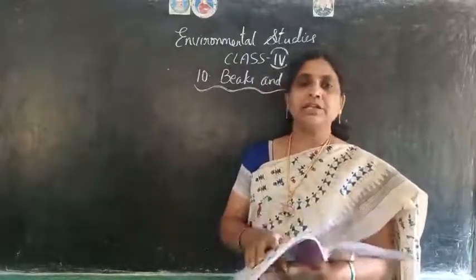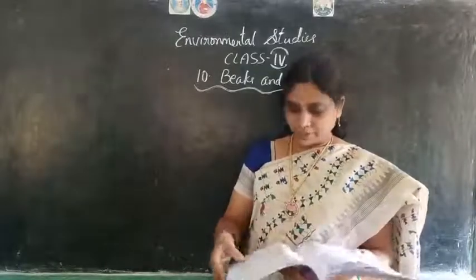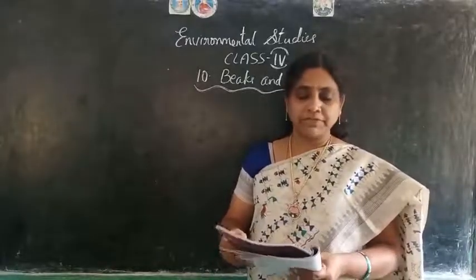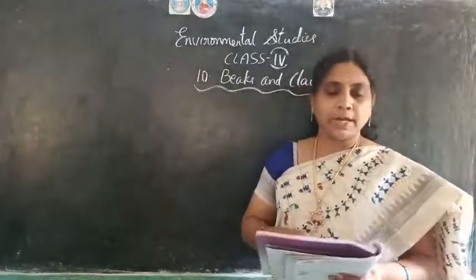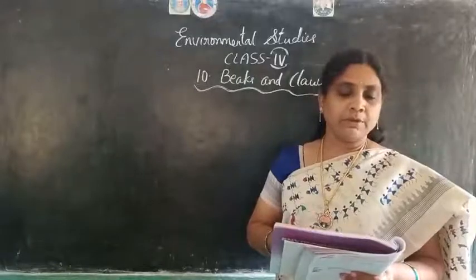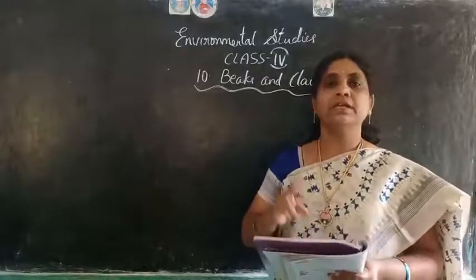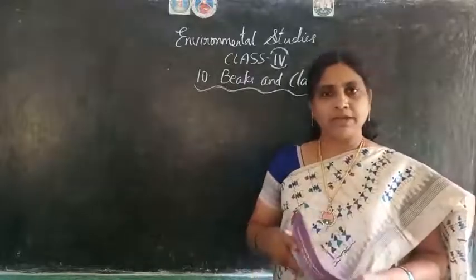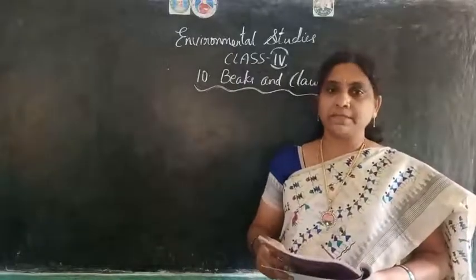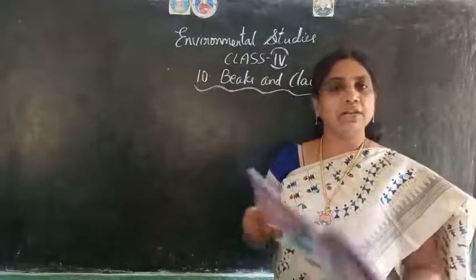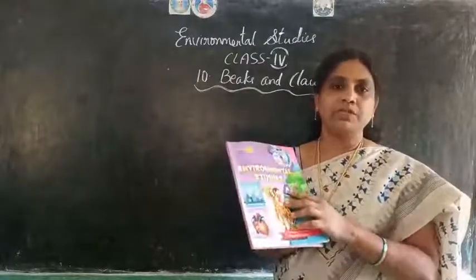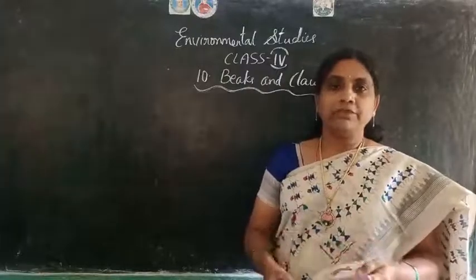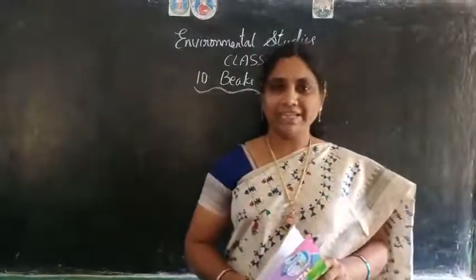We will continue the remaining part in the next class. Today's homework is from page number 57: question one — why do birds have a beak? Question two — why do hawks have hooked beaks? Read and write these two questions once in your homework book. Workbooks with answers are available in the school campus. Write your homework without fail. Have a good day, children. Thank you.